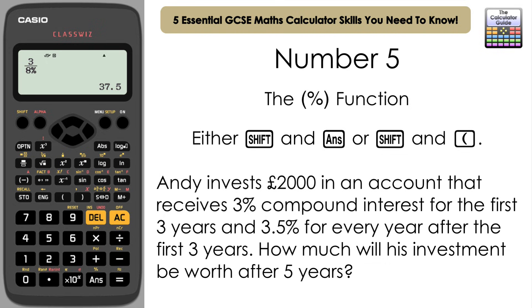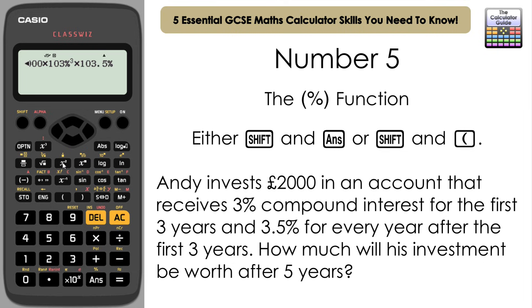Here's a compound interest question: Andy invests £2,000 in an account at 3% compound interest for the first three years and 3.5% for every year after that. How much is it worth after five years? Input 2000, multiply by 103% to the power of 3 for the first three years, then multiply by 103.5% squared for the remaining two years. Press equals and the calculator gives £2,341.11.